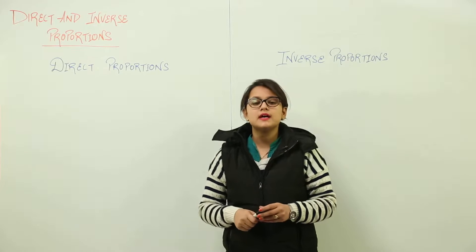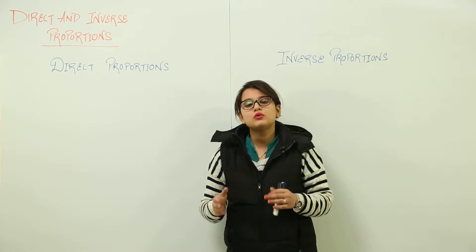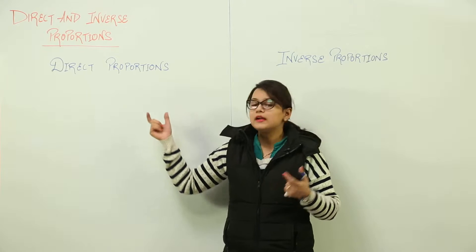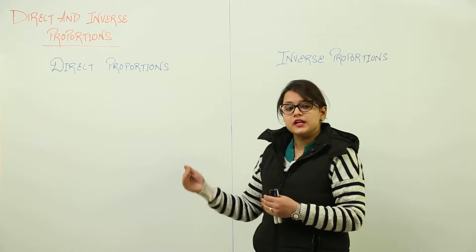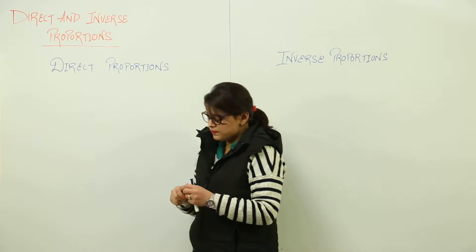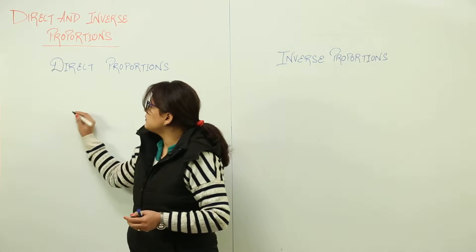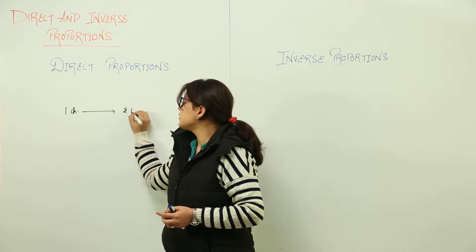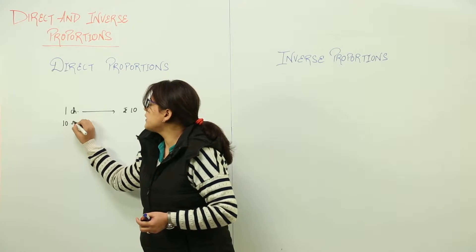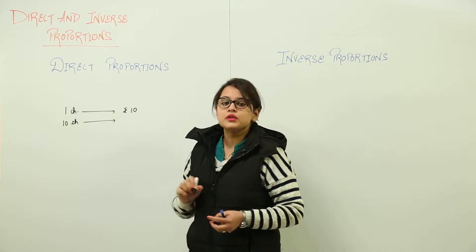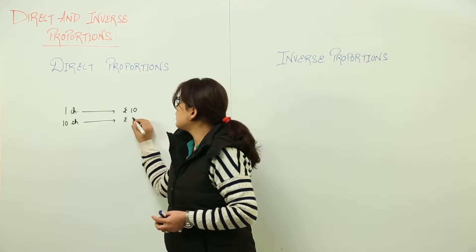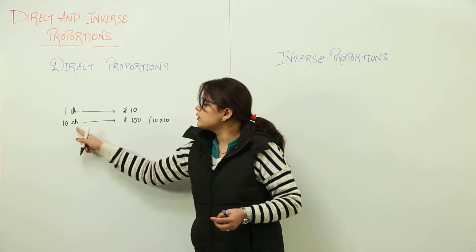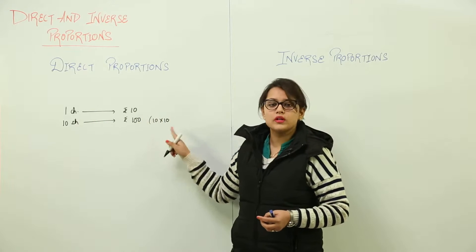Today we will be doing direct and inverse proportions. You are already familiar with the word proportions; I will be discussing the words direct and inverse. To understand the difference, here is one example: if one chocolate costs rupees 10, and you want to buy 10 chocolates, how much would that cost? It would be rupees 100. You multiplied the number of chocolates by the cost of one chocolate.